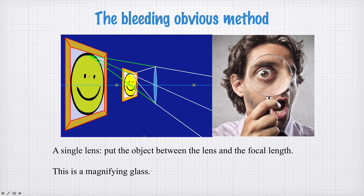Well, the bleeding obvious method is to put a lens between your eye and the object you're looking at. So here's the object you want to look at, here's the lens, and your eye is somewhere over here. And as long as the object is between the focal length of the lens and the lens itself, it'll make something look bigger. And this is a magnifying glass.